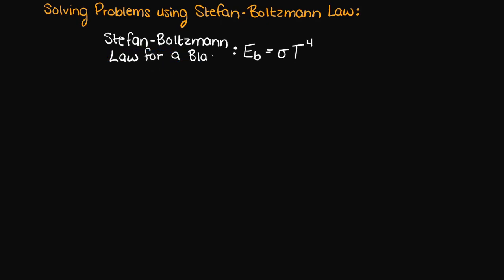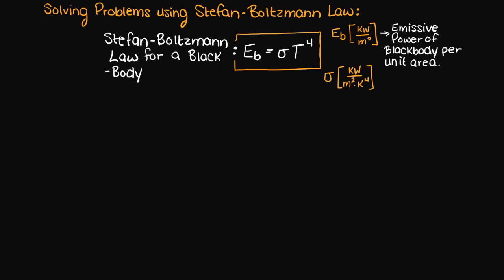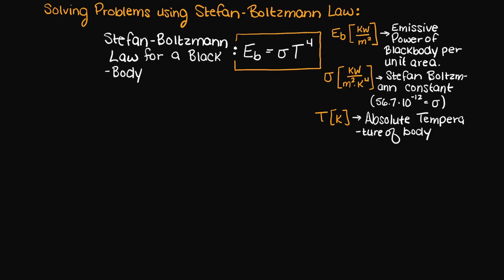Hi everyone, in this video I want to walk you through solving a few examples using Stefan-Boltzmann's law, which if you remember from our last video is the power emitted by a black body is equal to the Stefan-Boltzmann constant times the absolute temperature of the black body to the 4th power. I've written that out in all the relevant units as well to further clarify that to you.